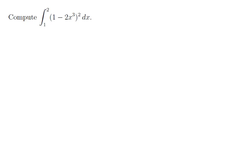Compute the definite integral from 1 to 2 of the function (1 - 2x³)² dx. Let's begin by solving a related problem first: the indefinite integral of (1 - 2x³)². Let's find an antiderivative first.